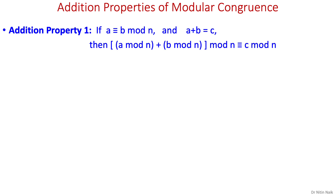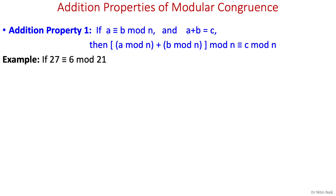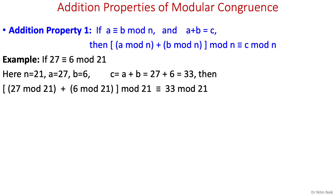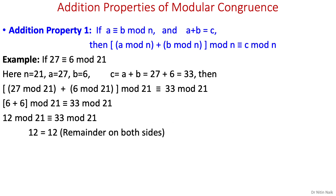Now we are going to learn the addition properties of modular congruence. The first property states that if we are adding two integers a and b and their sum is c, then calculating c mod n is the same as adding a mod n to b mod n and then calculating their sum mod n. For example, if 27 is congruent to 6 mod 21, we know the values of n, a, b, and c. Placing these values in the congruence relation and finding the mod, we get the final relation and their mods are equal. So this addition property is true.